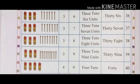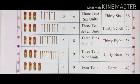Three bunches of math sticks means 30 math sticks. With 8 math sticks: 38. Three bunches of math sticks means 30 math sticks. With 9 math sticks: 39.